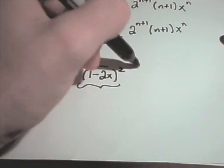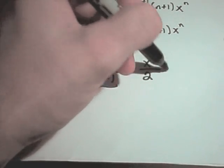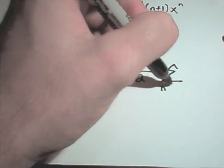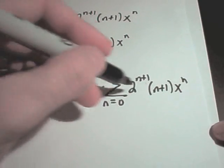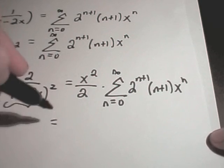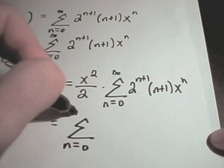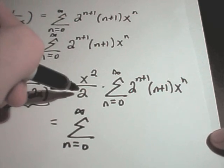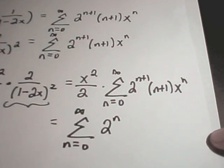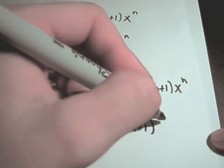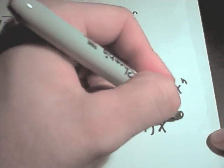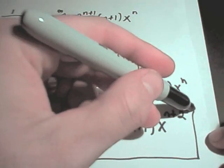So I can write this as x squared over 2 times the series from n equals 0 to infinity of 2 to the n plus 1 times n plus 1 times x to the n. Now it's the same thing as before — you just multiply back through. So I'll have from n equals 0 to infinity: 2 to the n plus 1 divided by 2 gives 2 to the n; n plus 1 stays the same; x squared times x to the n gives x to the n plus 2. And that's a power series representation.